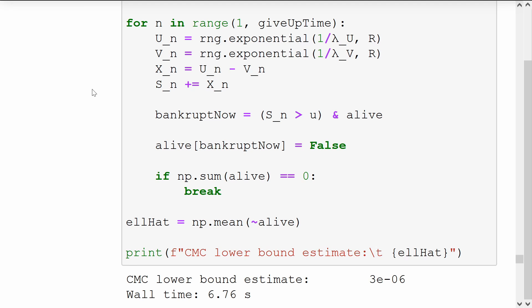This took almost 7 seconds to simulate and our estimate for ruin is a lower bound of 3 by 10 to the minus 6.